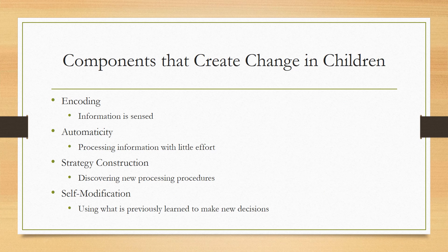According to Robert Siegler, there are three components that work together to create change in children. They are encoding, automaticity, and strategy construction. Encoding is when information is sensed. Automaticity is processing information with little effort. Strategy construction is discovering new processing procedures.